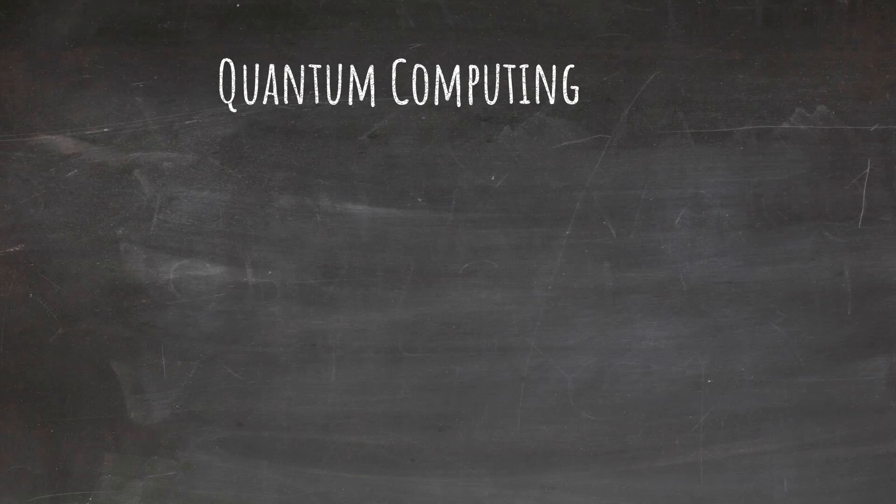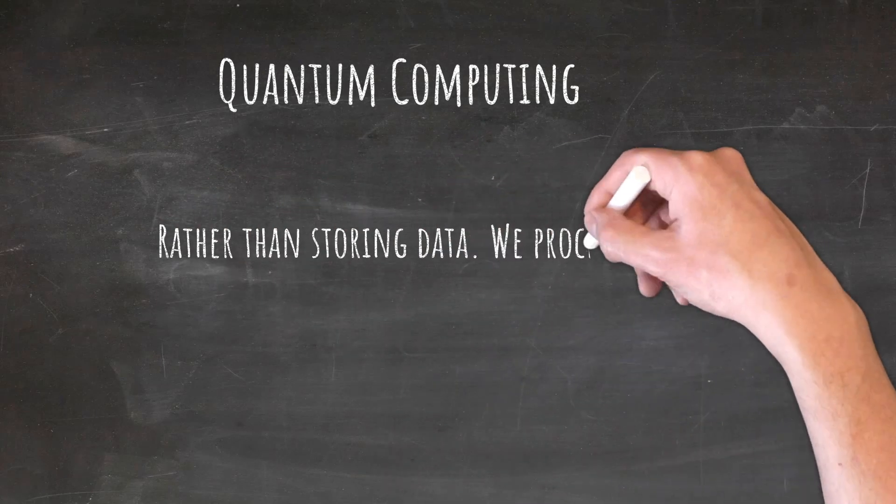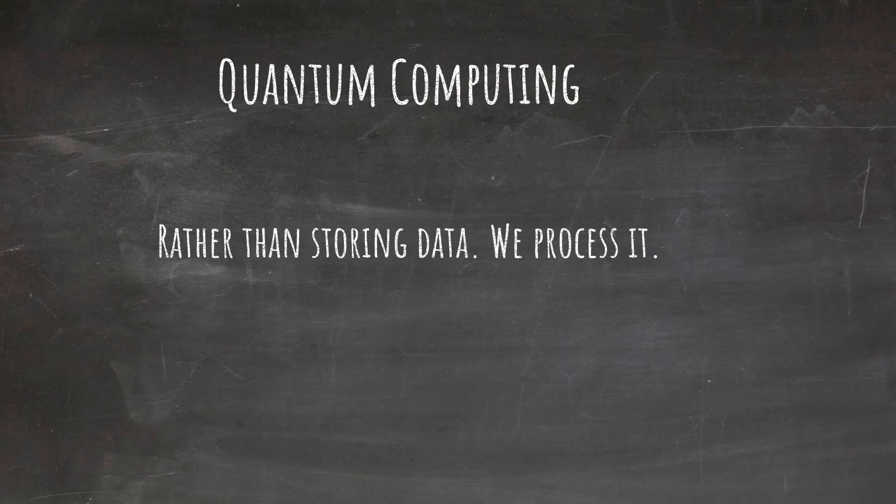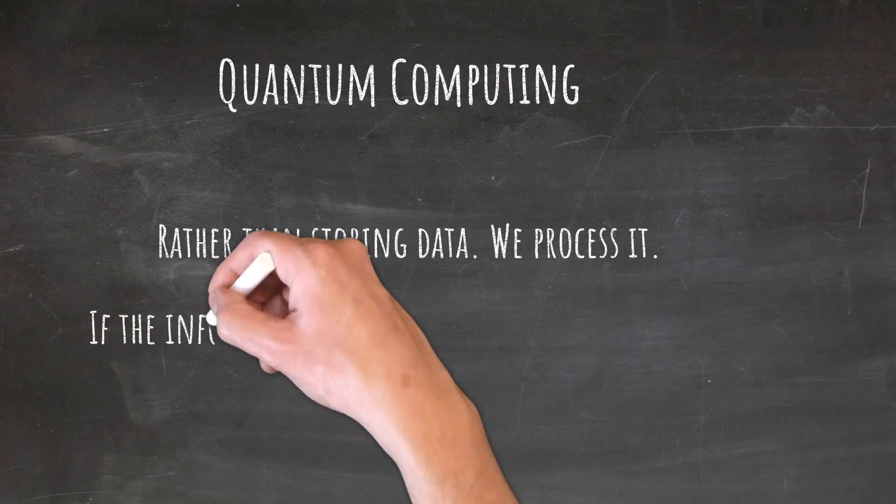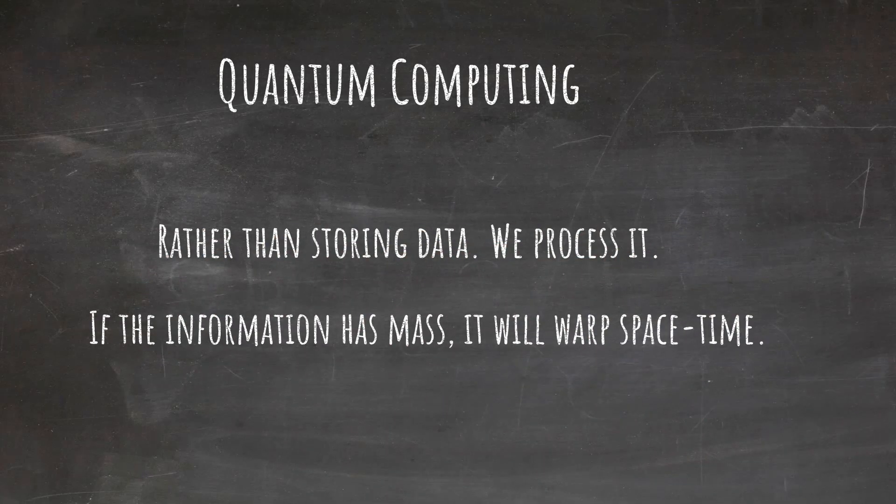Rather than storing a terabyte of data, we would process a terabyte of data - same thing, same effect. But then if we ramp it up to way more than a terabyte of data, which is conceivable with a quantum computer, we would start generating massive gravitational waves. And because we're using a computer, we can change the way it's processed to warp space-time to our will.